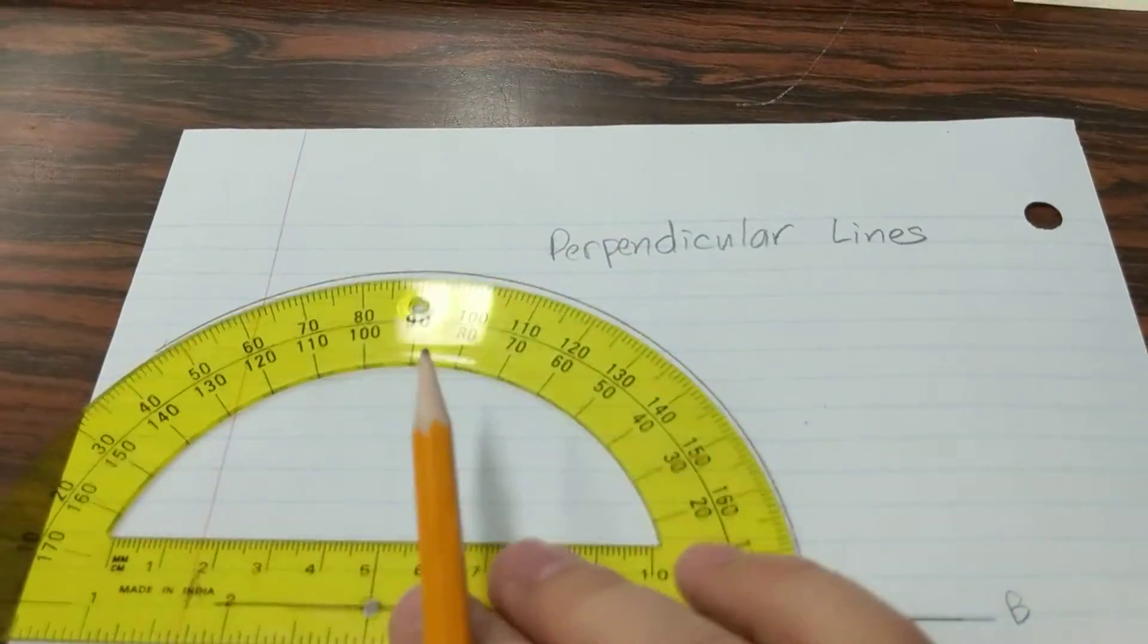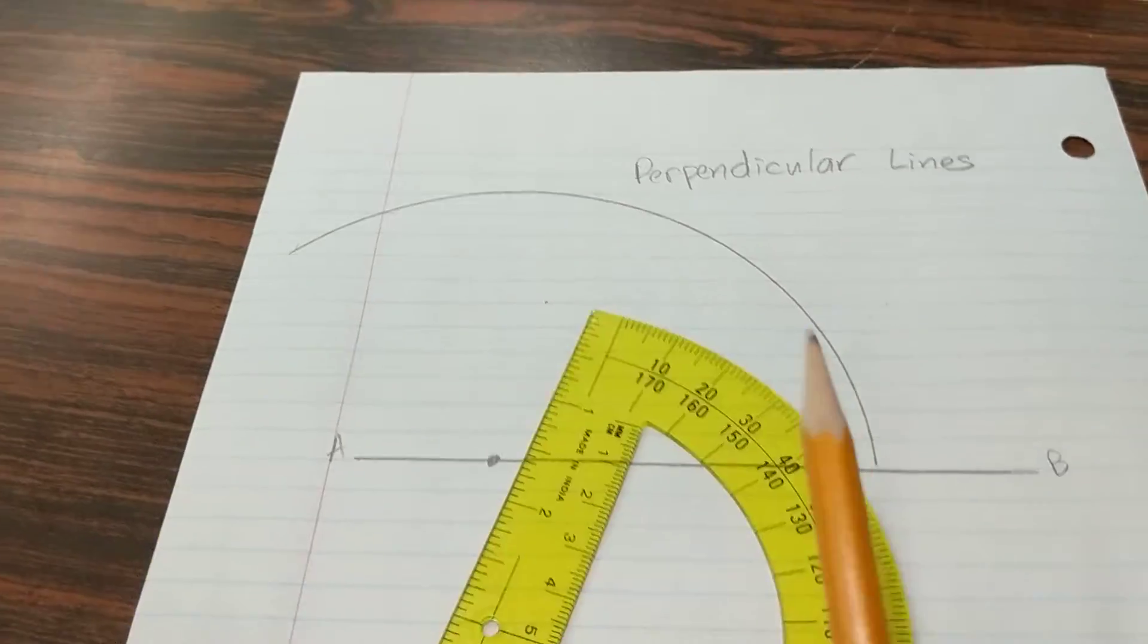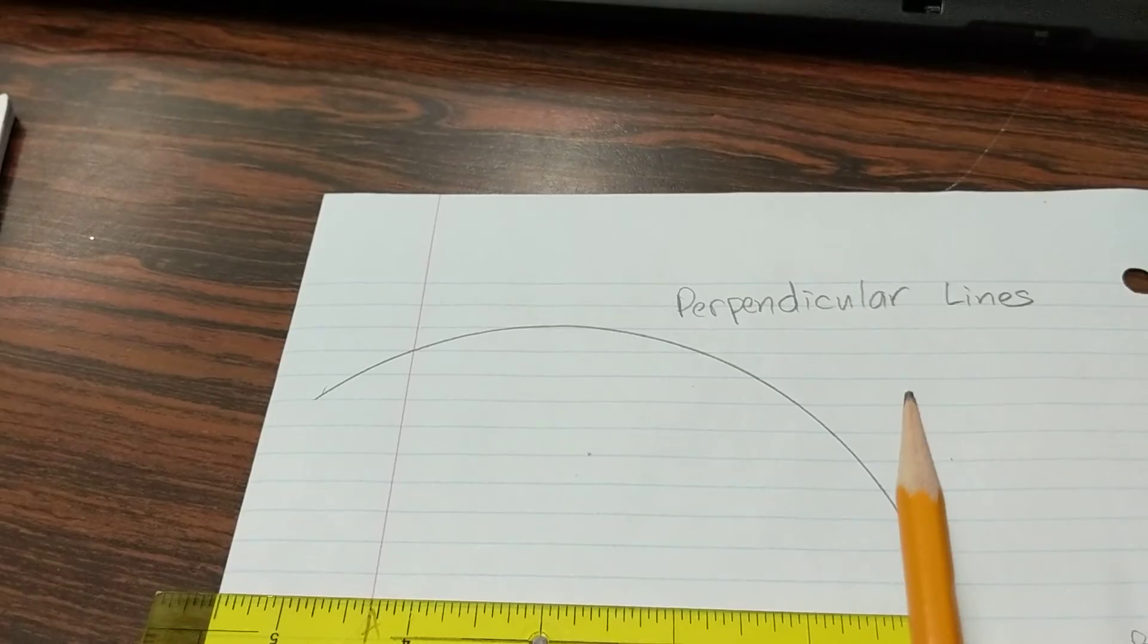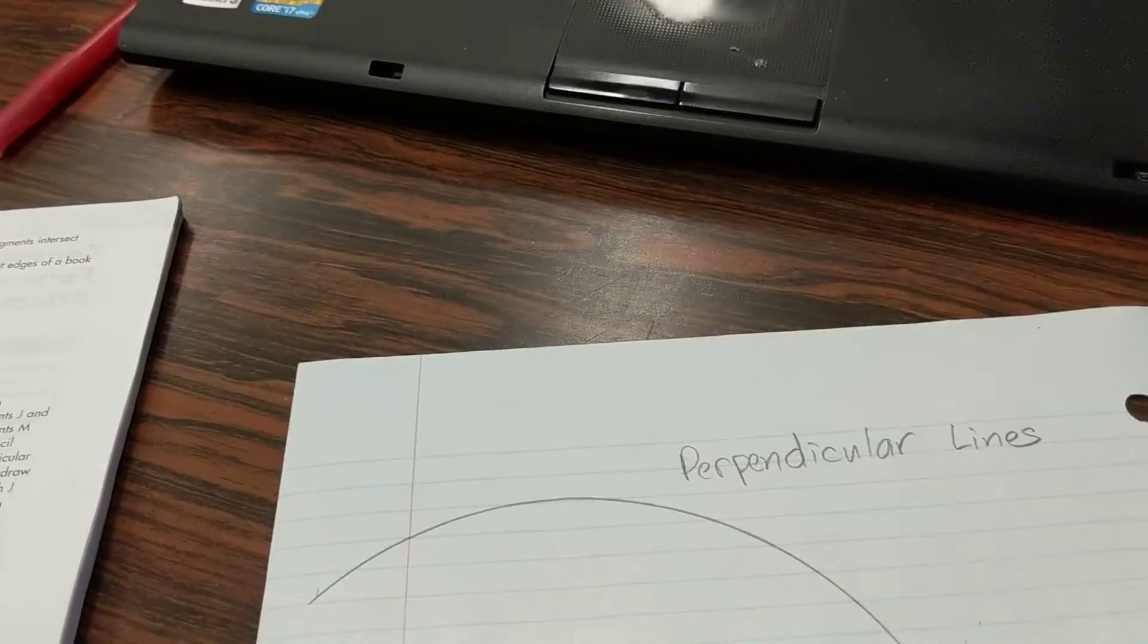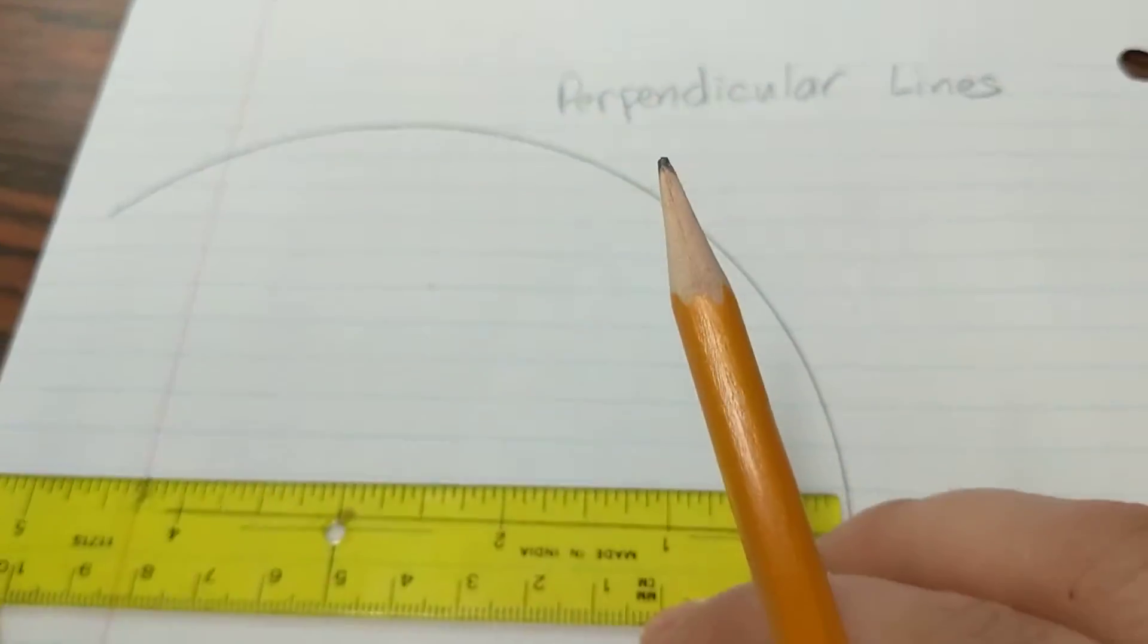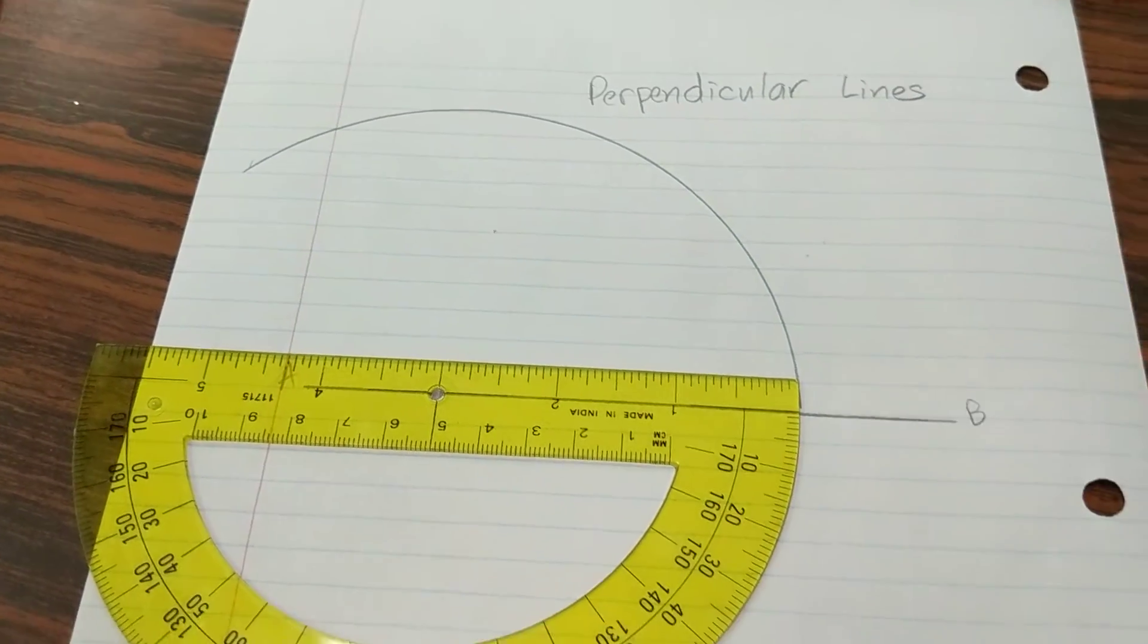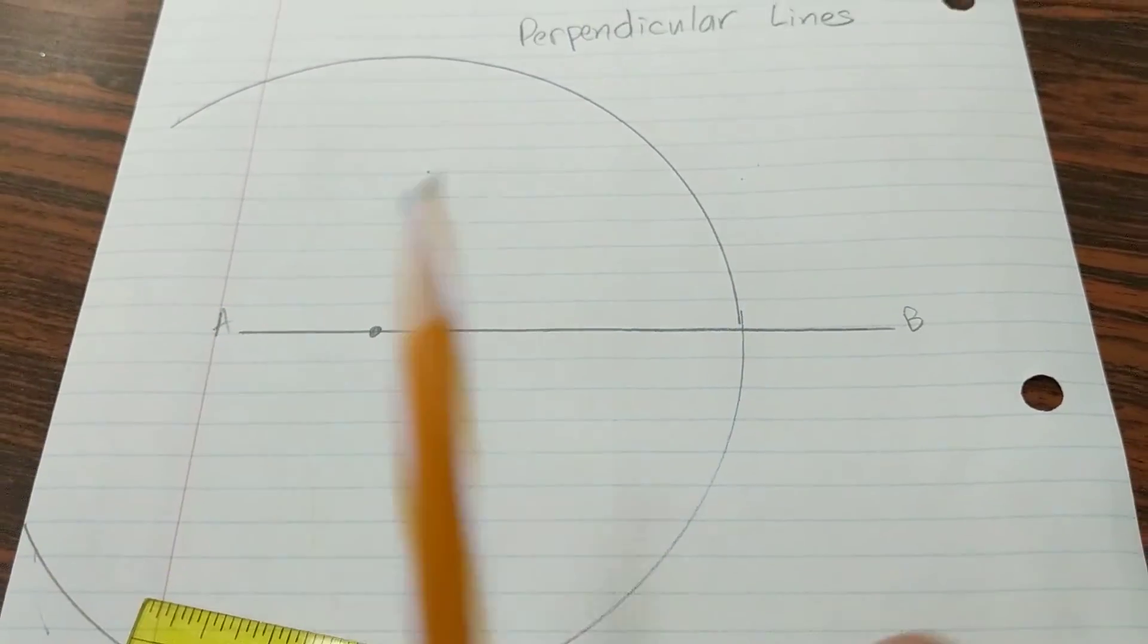Using a pencil, we draw across. Now we need to flip this around because we need to complete the circle. So we put this upside down on here and we're going to do it again. We draw along that curve and so we've made a circle.